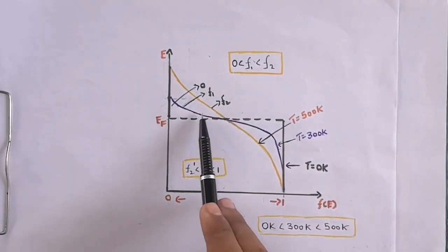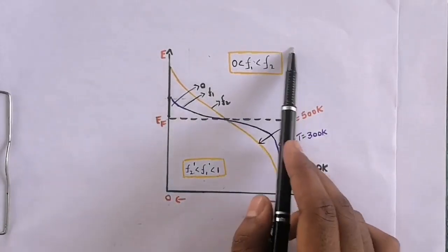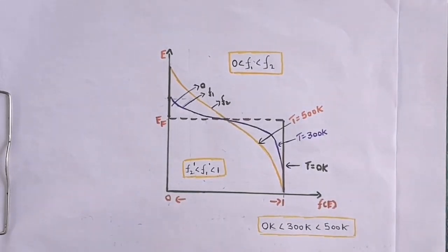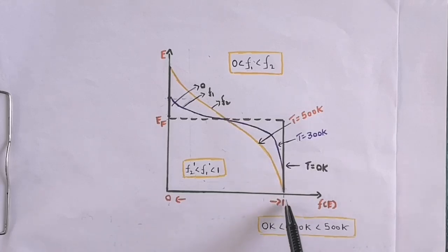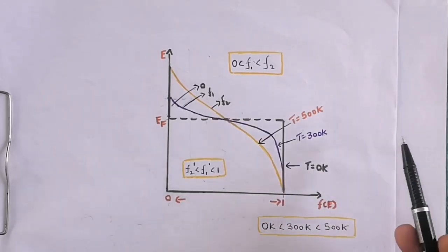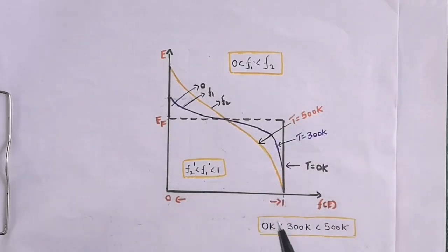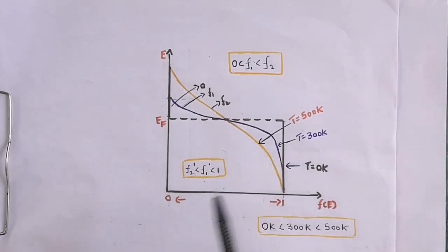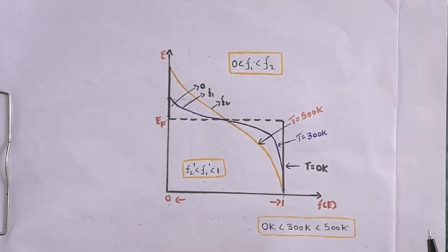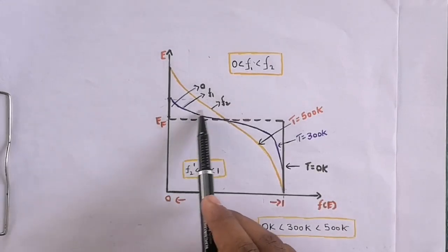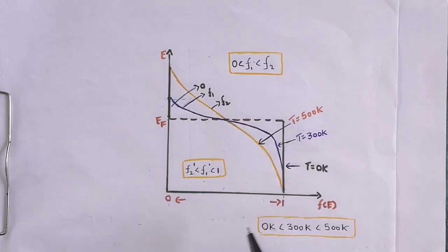Let these graphs above the Fermi level be f1 and f2 — the probability of finding an electron above the Fermi level increases with increasing temperature. Below the Fermi level, at T = 0 K the probability is 1; at 300 K it decreases, and at 500 K it decreases further. Let these be f1' and f2'. So below the Fermi level, increasing temperature decreases the probability of finding an electron.